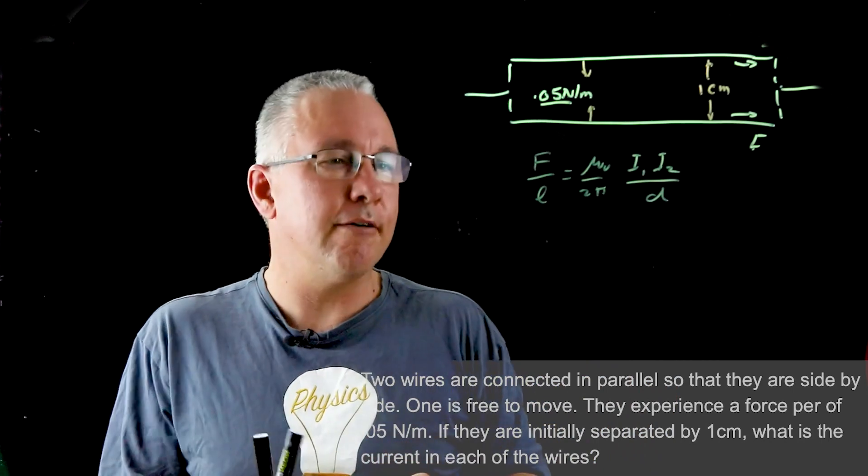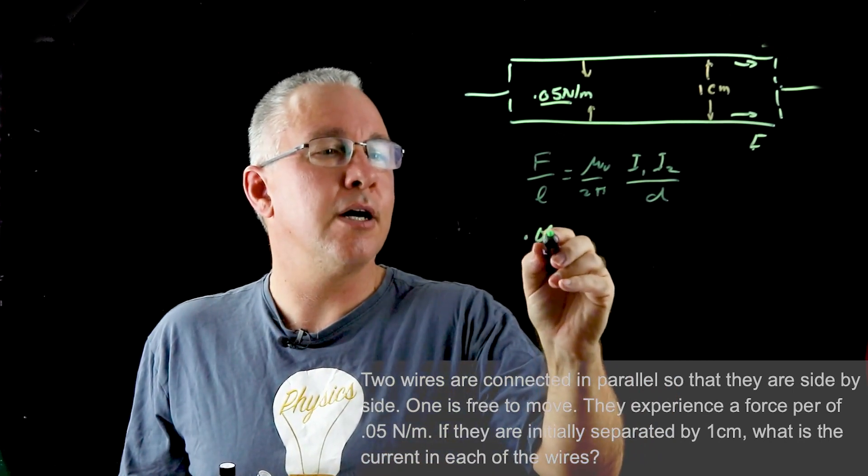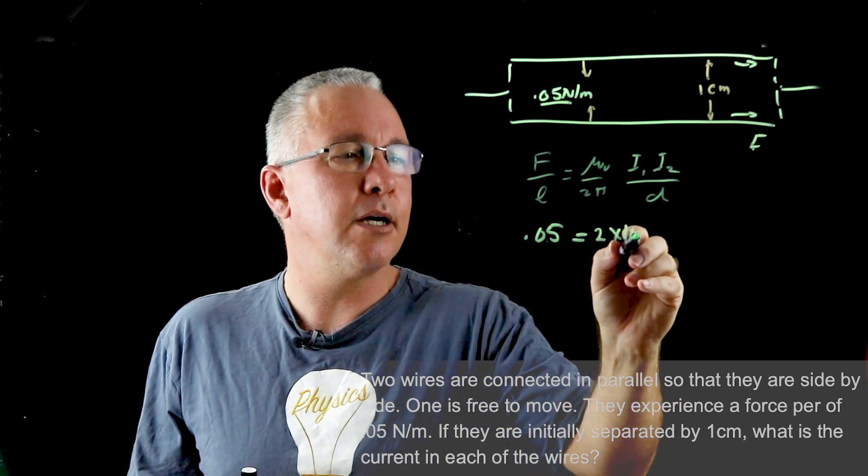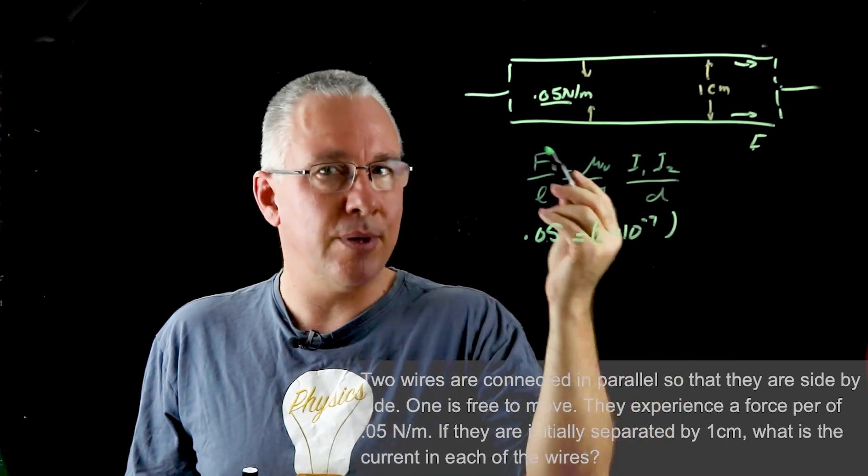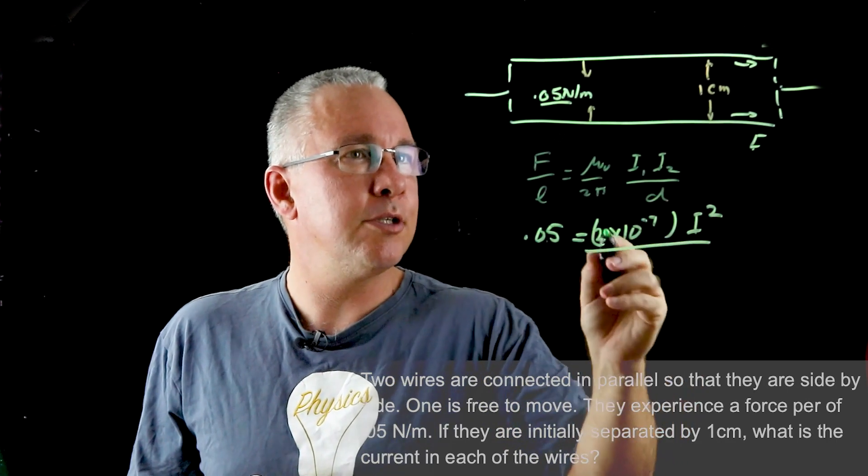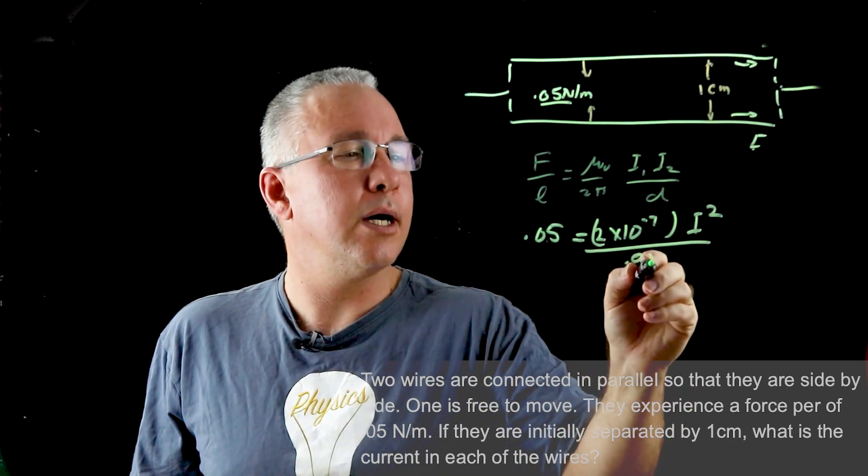If we substitute all our values in, we get a value here of 0.05, that's our value on this side of the equation. This here approximates to 2 × 10⁻⁷. Then we have i₁ and i₂, but we have the same current so therefore we can make this i², and that distance between them, using correct SI units, is equal to 0.01 meters.